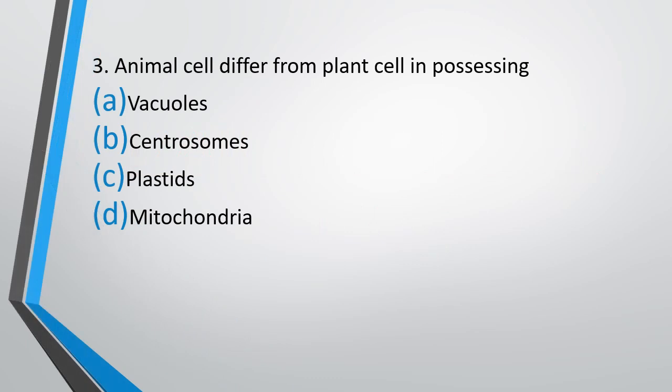Question number 3. Animal cell differs from plant cell in possessing: Vacuoles, Centrosomes, Plastids, or Mitochondria. Correct answer is option B — Centrosomes.